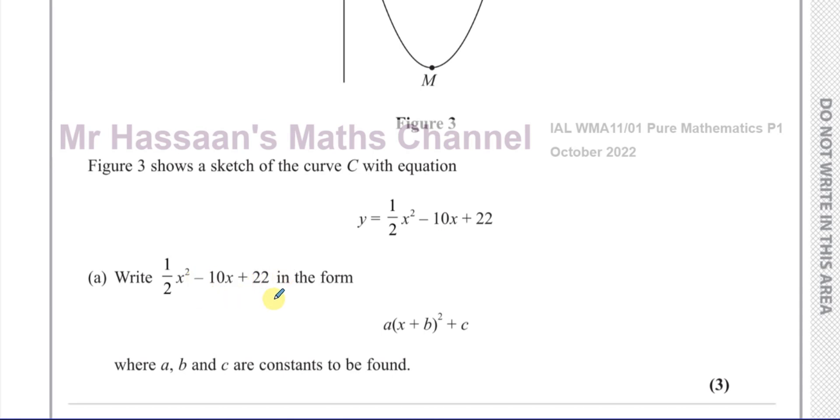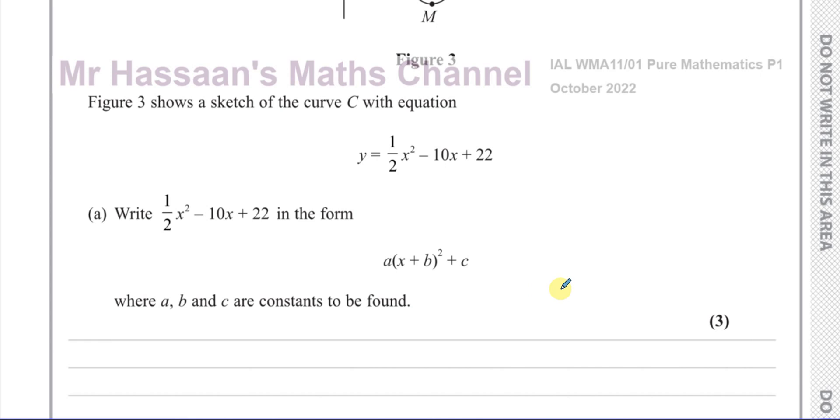We've got to write this in the completed square form basically. We've got to complete the square for part a. So we need to complete the square for a half x squared minus 10x plus 22, where a, b and c are constants to be found. So it's all about completing the square, this first part of this question. Important skill that we need to know.